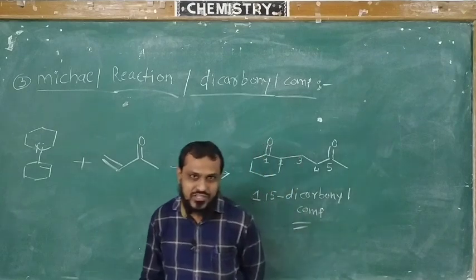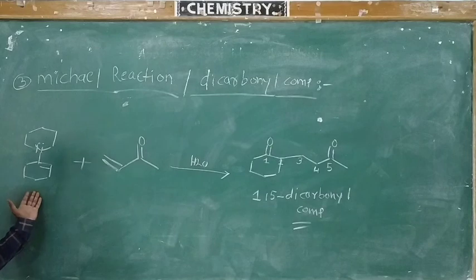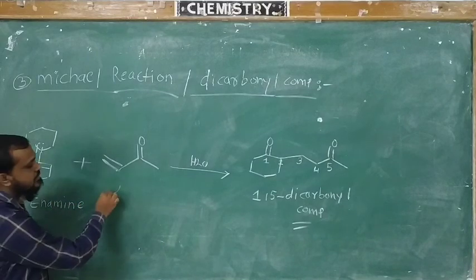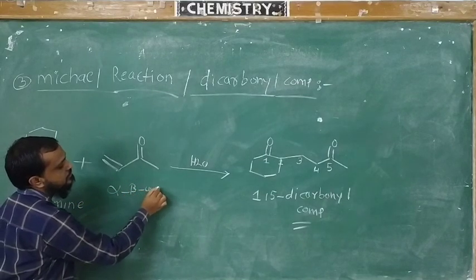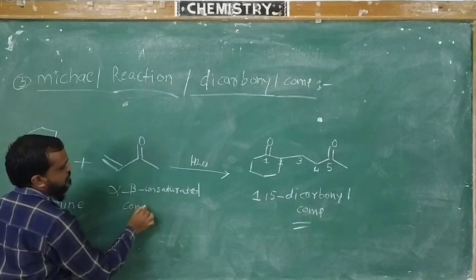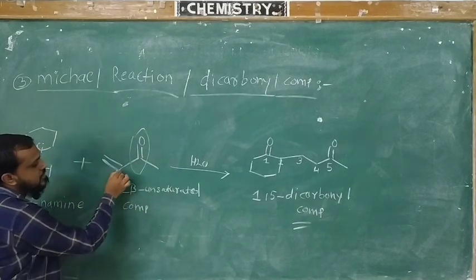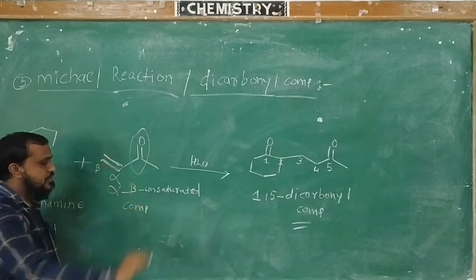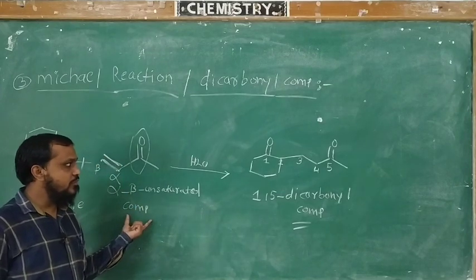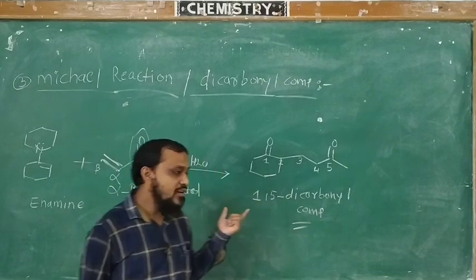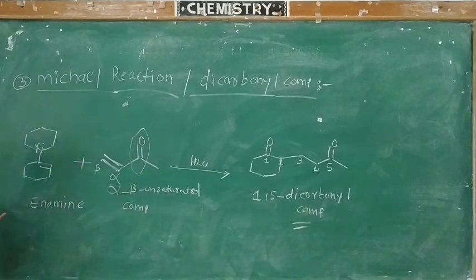The enamine shows Michael reaction. In Michael reaction, enamine is treated with an alpha,beta-unsaturated compound. Look here — this is our functional group, this position is the alpha position, and this position is the beta position. So this is the alpha,beta-unsaturated compound. It produces a 1,5-dicarbonyl compound. This is the general reaction of Michael reaction.